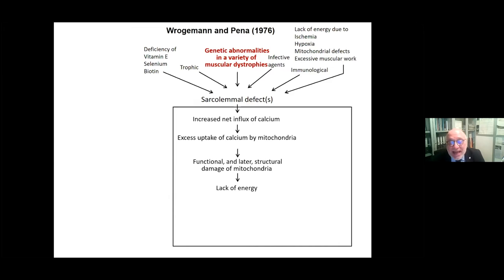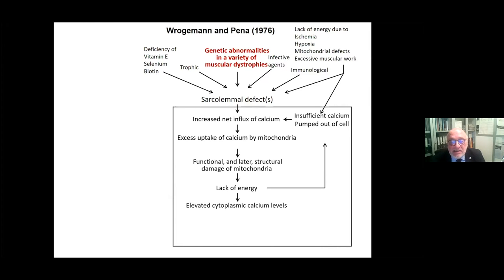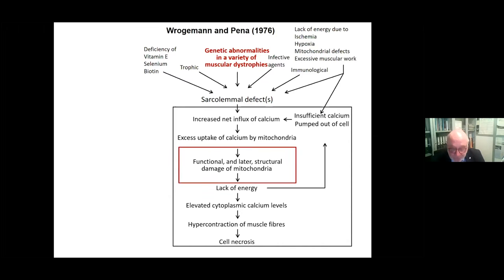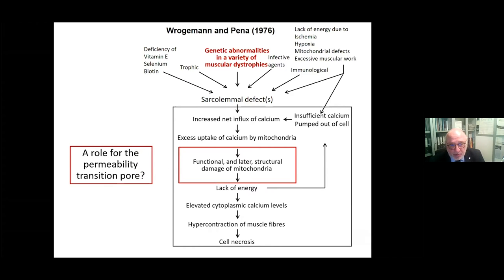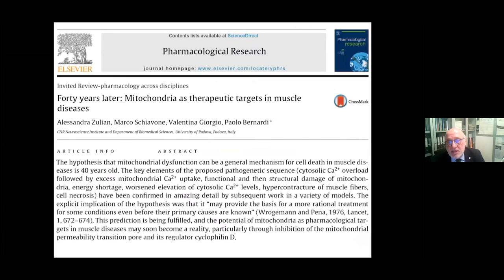I've been interested in assessing whether this damage is due to the so-called permeability transition pore. You heard about it in Russ Heppel's talk. I think the answer is yes, and you can find an overall review dedicated to Klaus Roggemann, 40 years later, with all the evidence that involves the transition pore in mitochondrial damage.